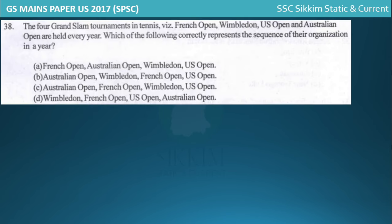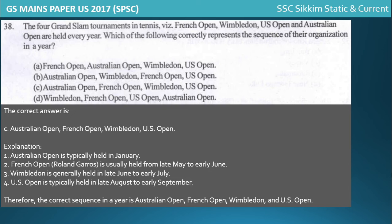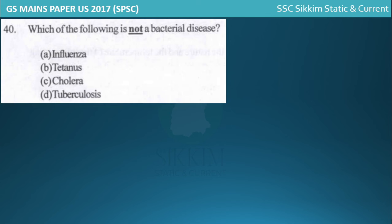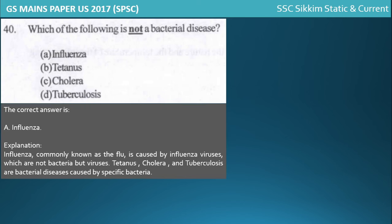For current affairs, the sequence of Grand Slam tournaments is: Australian Open, French Open, Wimbledon, and US Open. The new Director General of WHO is Tedros Adhanom. For the biology question on bacterial diseases: influenza is a viral disease, while tetanus, cholera, and tuberculosis are bacterial diseases.